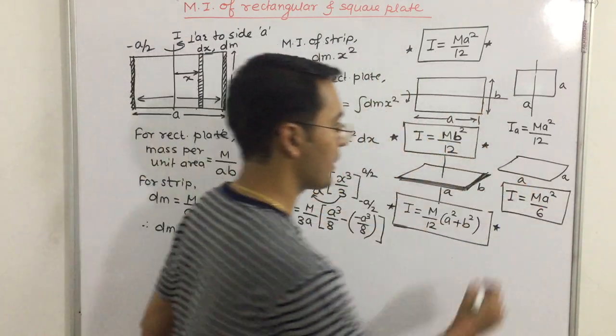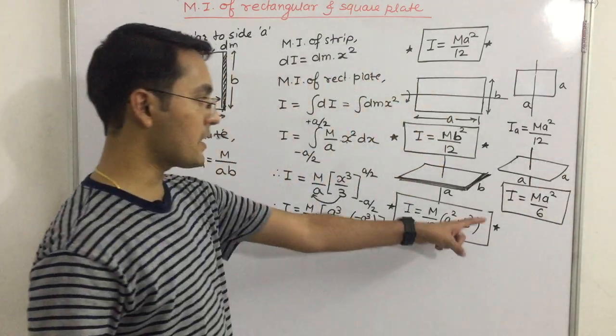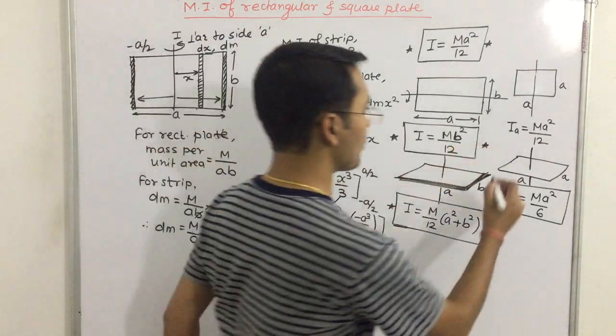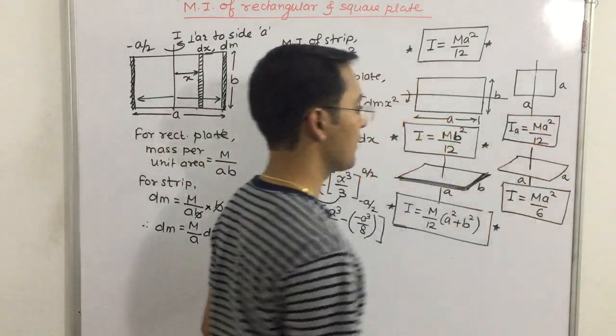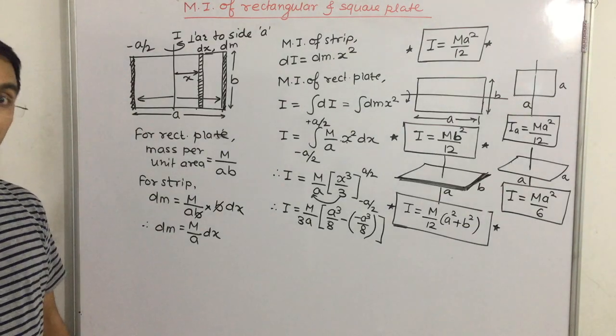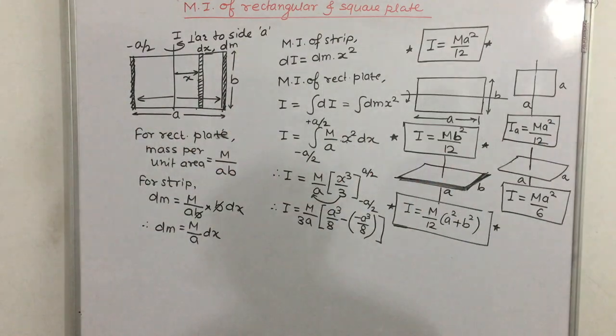So this is the concept of rectangular plate. These are the moment of inertia for rectangular and square plate. So clear to everyone, moment of inertia of rectangular and square plate. So this was all about moment of inertia. Thank you.